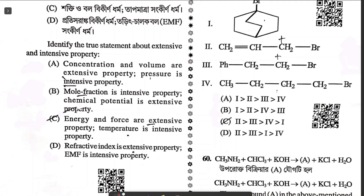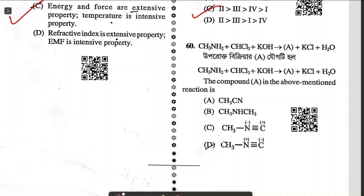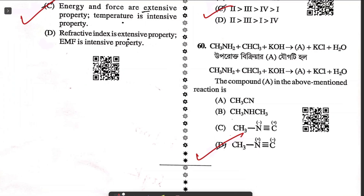Question fifty-eight: identify the true statement about extensive and intensive properties — very simple, option C. Question fifty-nine: correct order of reactivity of organic halides towards unimolecular SN1 — related to carbocation stability — answer option C. Last question: carbylamine reaction — methylamine reacts with chloroform and KOH to give methyl isocyanide. That's the answer. If you have any doubt related to any question, feel free to connect. Stay tuned to the YouTube channel. Thank you.